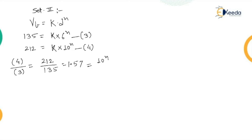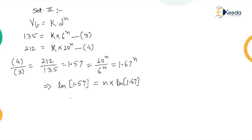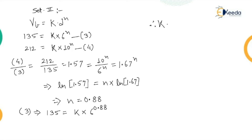The K terms cancel, giving (10/6)^n = 1.67^n = 1.57. Taking natural log on both sides: ln(1.57) = n × ln(1.67), giving n = 0.88. Referring to equation 3: 135 = K × 6^0.88, which gives K = 27.9.